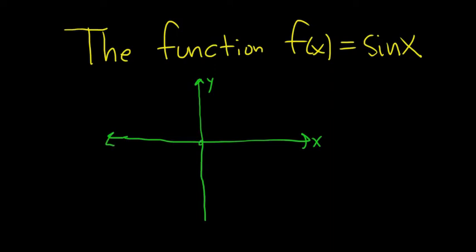The sine of 0 is 0, so you know that it starts at (0,0). Because if you plug in 0 here, you get sine of 0, and that's equal to 0. So you have the point (0,0).